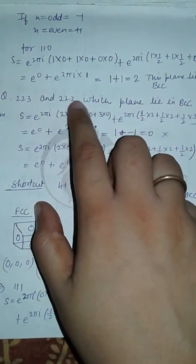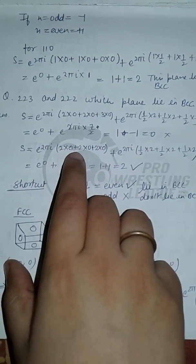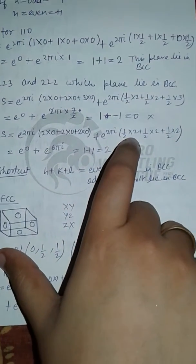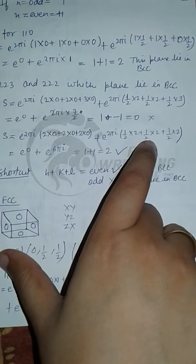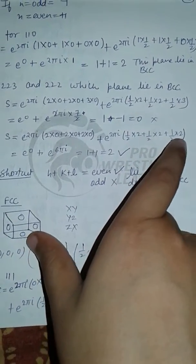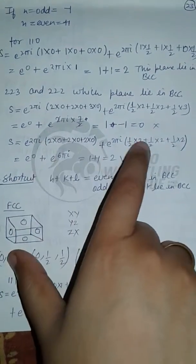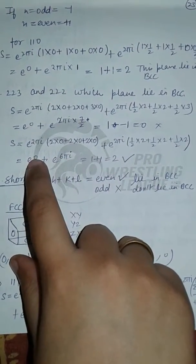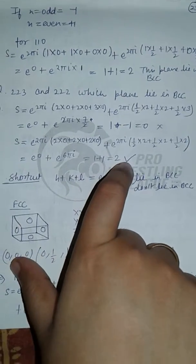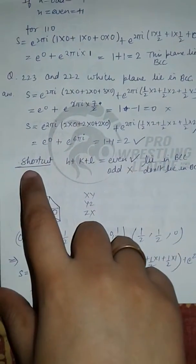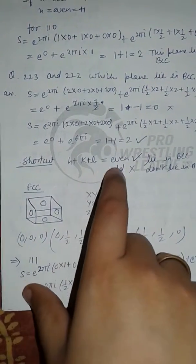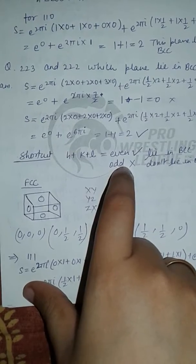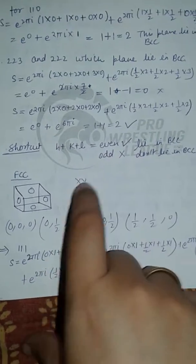For plane (2,2,2): S equals e to the power 2 pi i (2·0 + 2·0 + 2·0) plus e to the power 2 pi i (1/2·2 + 1/2·2 + 1/2·2). The first term is e to the power 0, and the second term is e to the power 6 pi i, both equaling 1. So 1 plus 1 equals 2, and this plane lies in BCC. The shortcut is: if h + k + l is even, the plane lies in BCC; if odd, it does not.